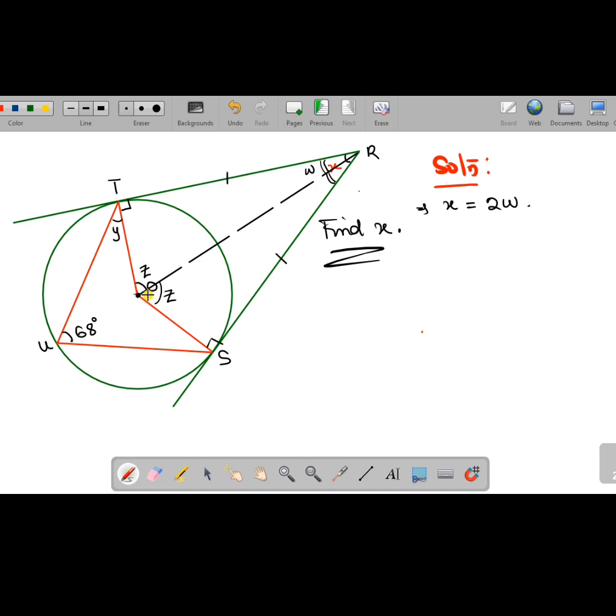There is a rule that says the angle at the center of a circle by an arc—here we have arc TS—is twice the angle formed at the circumference by the same arc. This same arc formed an angle 68 degrees. The implication is that the total angle at the center, which is 2z according to my construction, is going to be equal to 2 times 68.